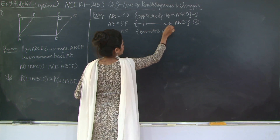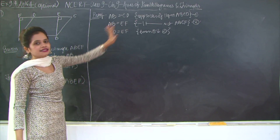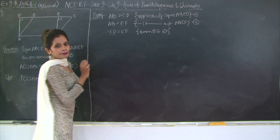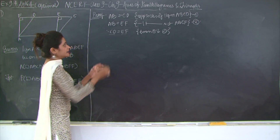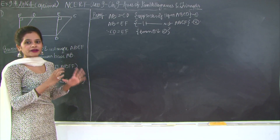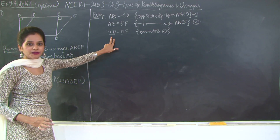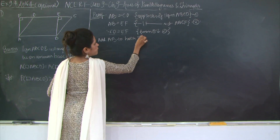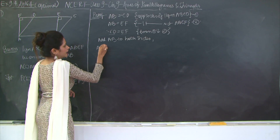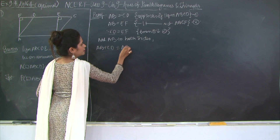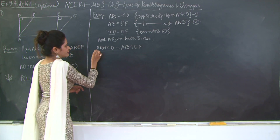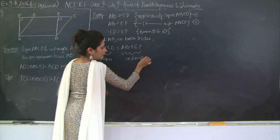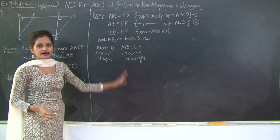Therefore, from 1 and 2, CD equals EF. Now adding AB to both sides, we get AB plus CD equals AB plus EF. So the sum of the lengths of the parallelogram equals the sum of the lengths of the rectangle. When you compare the sum of the lengths of the parallelogram and rectangle, they are equal. So we will now proceed with the breadth — the other pair of opposite sides.